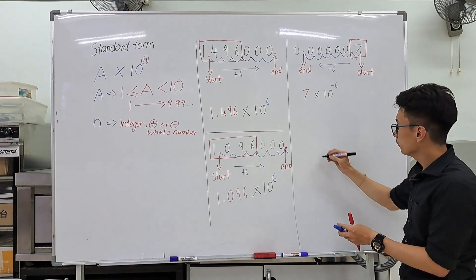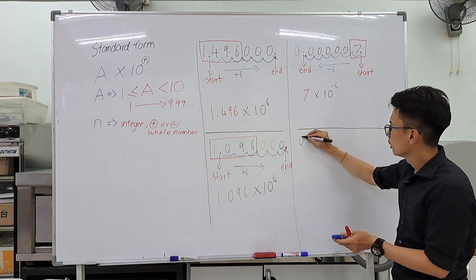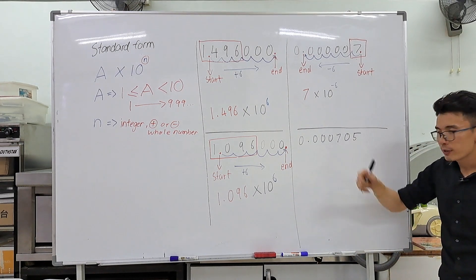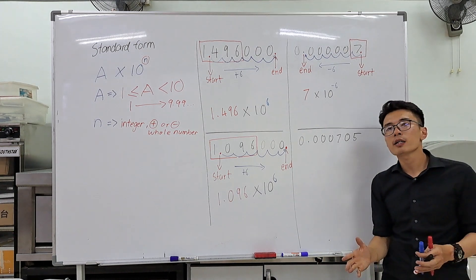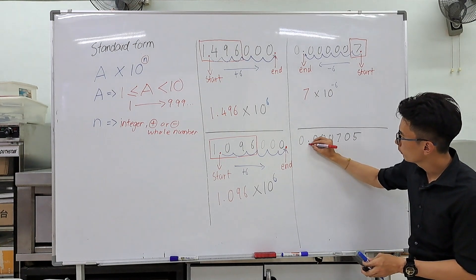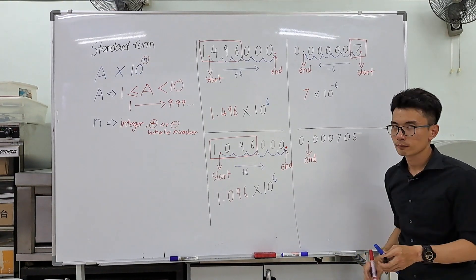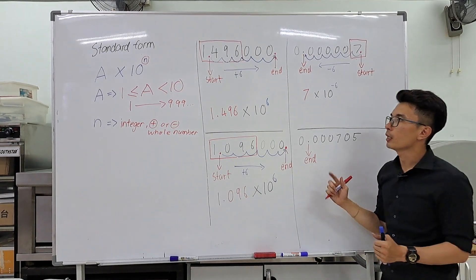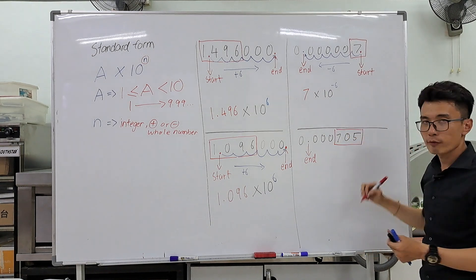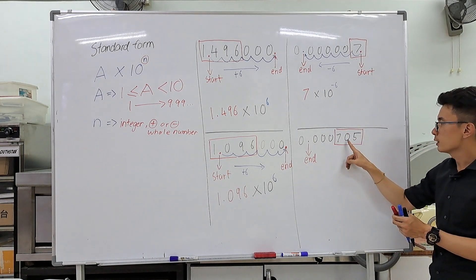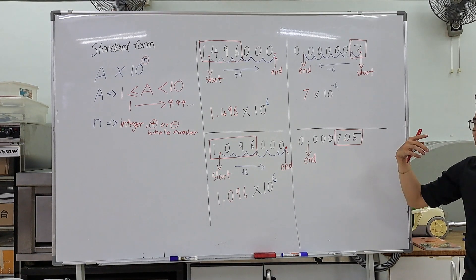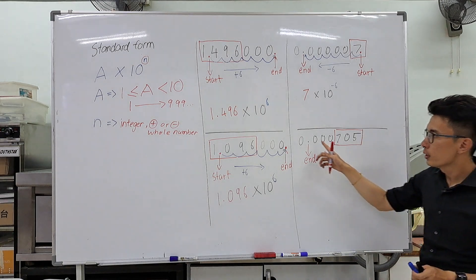Now another example: 0.0000705. Very similar. We identify where the decimal point is — that is our end. The numbers that make up our a are 705. Since the zero is between two non-zero digits, it is included as well.